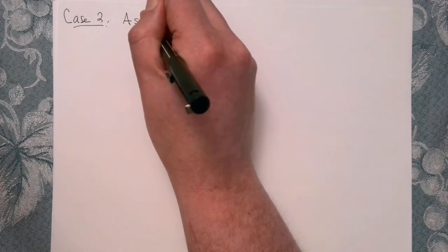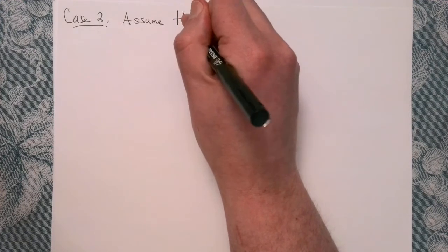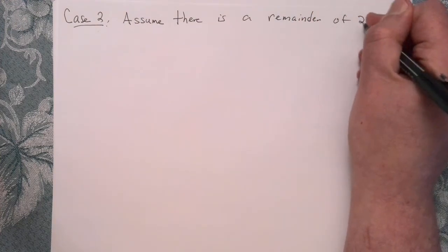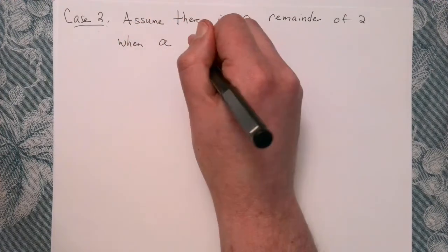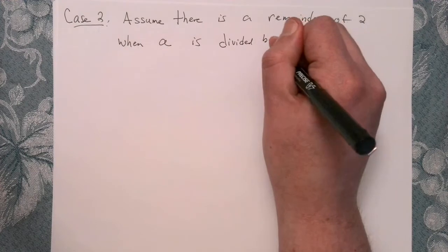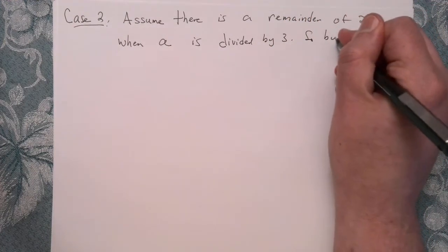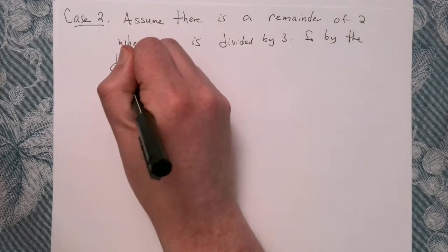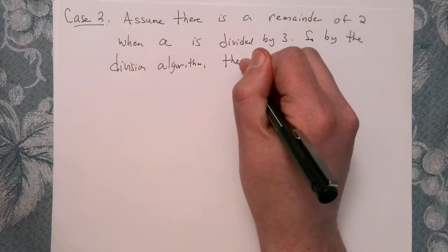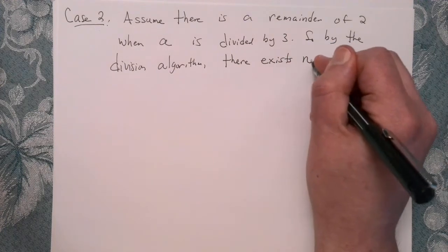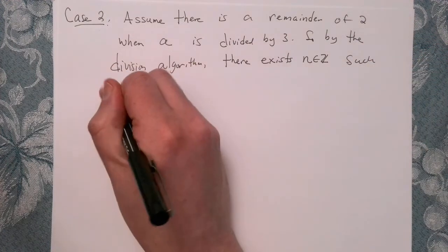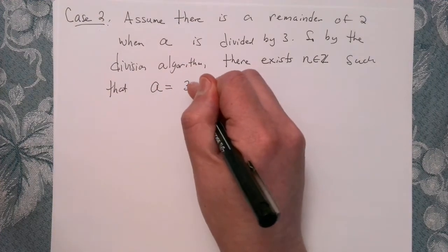So we're going to say assume there is a remainder of 2 when A is divided by 3. And again, we're going to invoke the division algorithm. And so by the division algorithm, there exists some integer n such that A is equal to 3n plus 2.